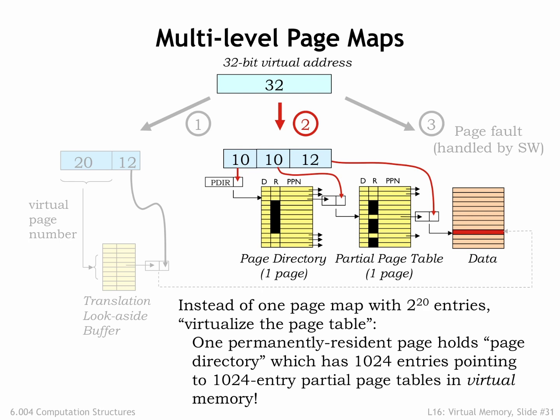The MMU implementation shown here uses a hierarchical page map. The top 10 bits of the virtual address are used to access a page directory, which indicates the physical page that holds the page map for that segment of the virtual address space. The key idea is that the page map segments are in virtual memory — they don't all have to be resident at any given time. If the running application is only actively using a small portion of its virtual address space, we may only need a handful of pages to hold the page directory and the necessary page map segments.